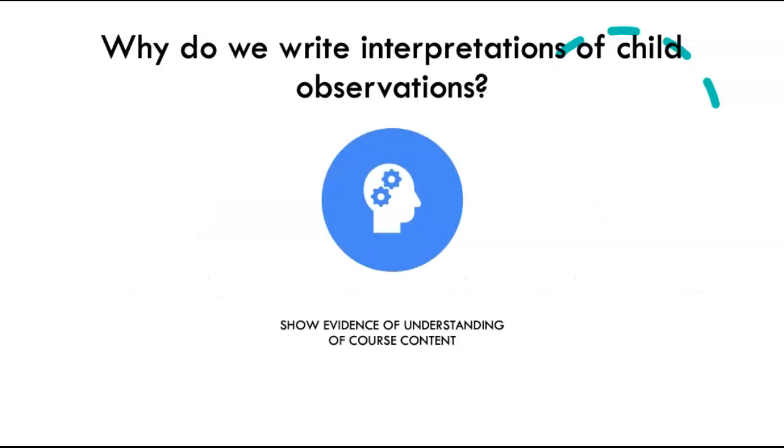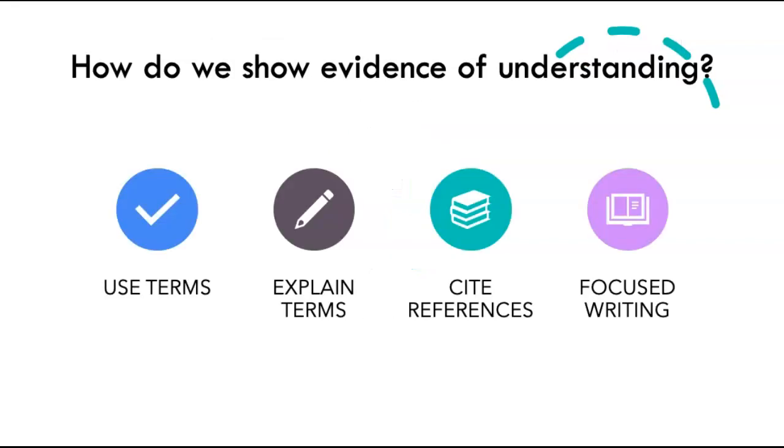And remember, the reason why you write interpretations of child observations is to show your evidence of understanding course content. And the way that you do that is by using terms, explaining the terms, citing references, and focusing your writing on the writing prompt.